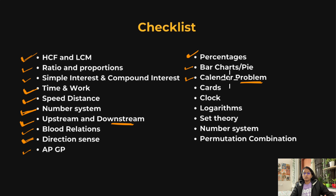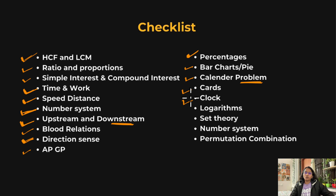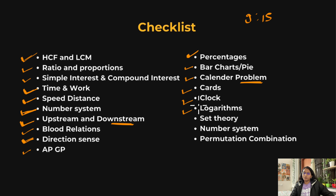Cards: know what's in a deck — how many kings, queens, and what types of cards there are. Clock problems: they ask for the angle between two hands of a clock at a given time, for example 9:15. Logarithms: know the properties of logarithms and practice some questions, as there have been questions based on log properties. Set theory: know some basics of set theory.